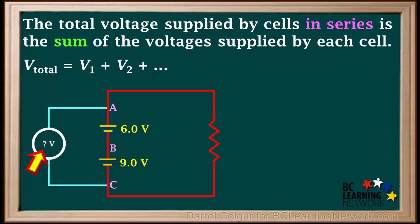So what do you think the voltmeter will read if its leads touch point A and point C? The total potential difference is 6 plus 9, or 15 volts. So the voltmeter reads 15 volts.